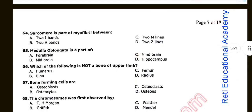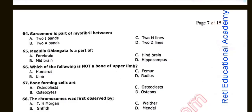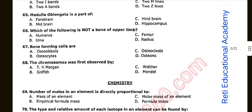Question number sixty-five: Medulla oblongata is the part of. The correct option is C: Hindbrain. Question number sixty-six: Which of the following is not a bone of the upper limb? Option C is correct: Femur. Question number sixty-seven: Bone-forming cells are C: Osteoclasts. Question number sixty-eight: The chromosome was first observed by A: T.H. Morgan. I will upload the remaining portion soon. Stay connected. Thank you. Sorry for any mistakes regarding pronunciation.